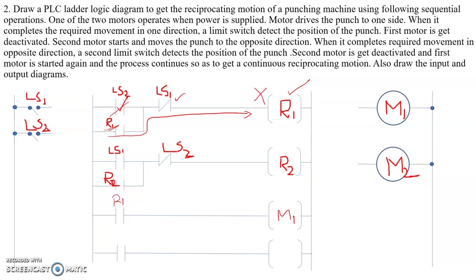When the plunger moves downwards to the extreme position, LS1 is energized. LS1 energized means its normally closed contact in the R1 rung opens, breaking that circuit so R1 is de-energized and motor M1 stops. At the same time, the LS1 normally open contact closes. LS2 is now off so its normally closed contact in the R2 rung is closed, so power flows to R2 and R2 is triggered.